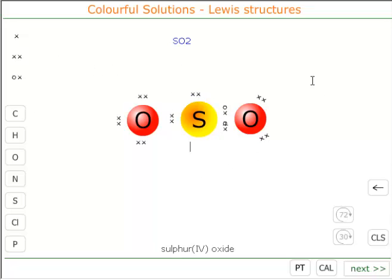Now this structure allows all three particles to have a completed octet. Sulfur double bonded to oxygen and sulfur dative coordinated to the other oxygen.